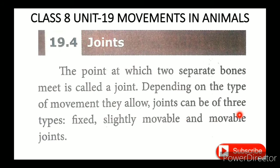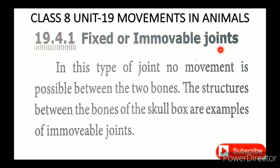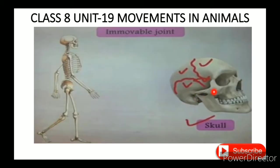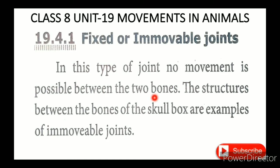Joints can be of three types. The first type involves the skull. In this type of joint, no movement is possible between the two bones.